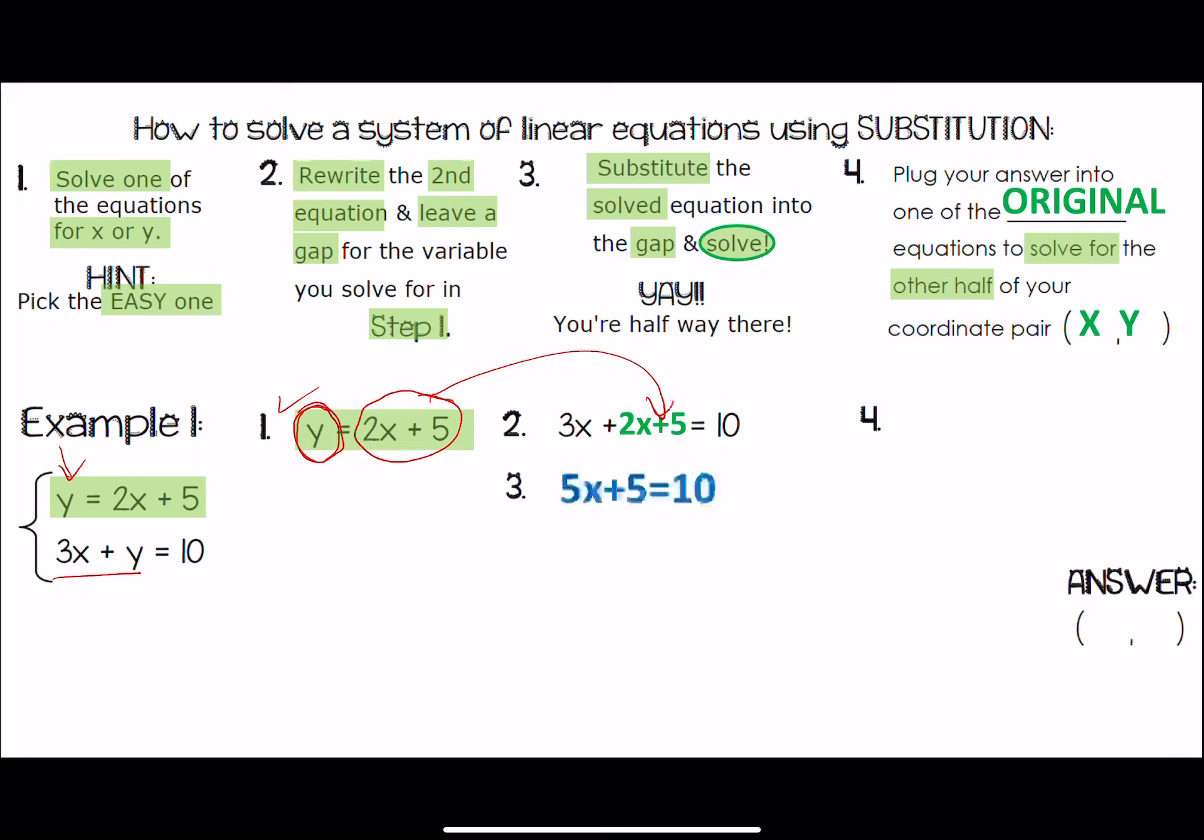So, 3x plus 2x gets us 5x. That 5 does not combine with the others. So, solve for x. Subtract the 5, you get 5x equals 5. Then, divide both sides by 5, and you get x equals 1.